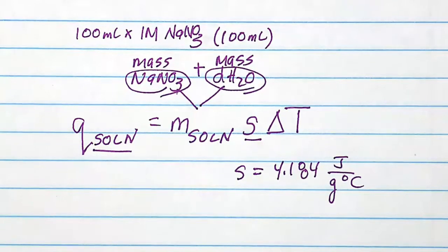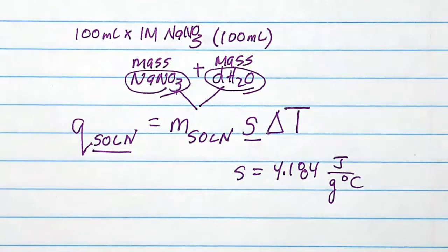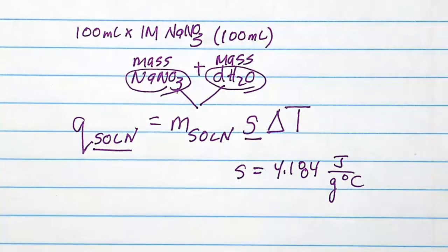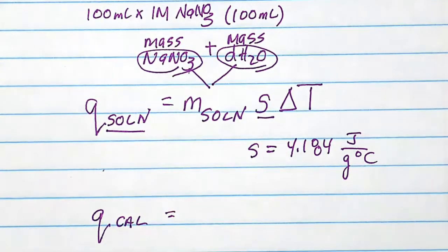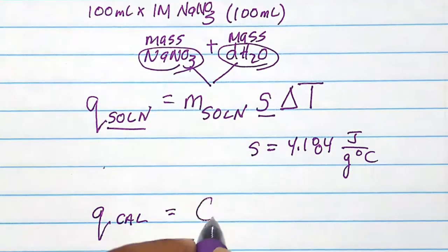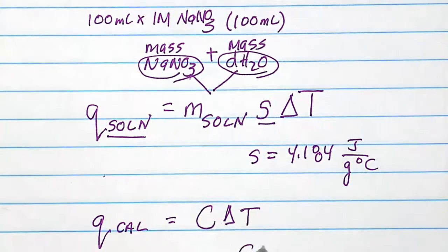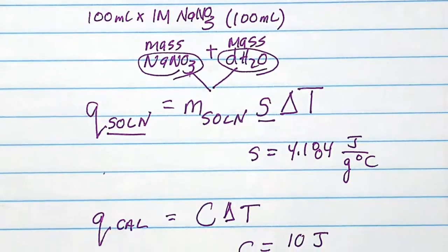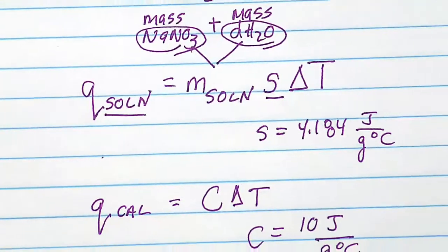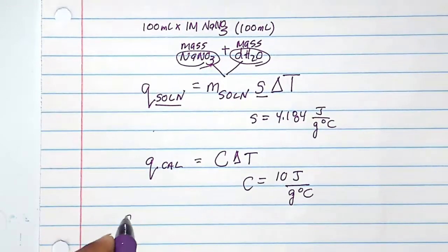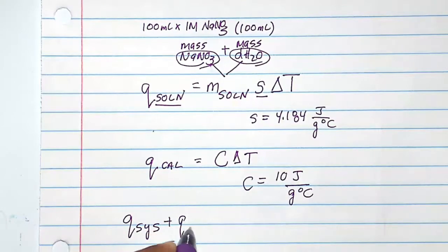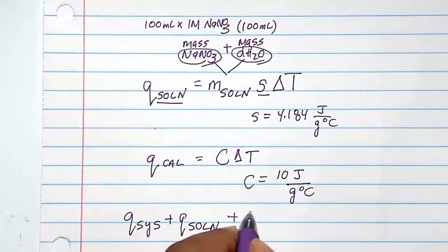The second heat you will have to determine is the heat of the calorimeter. Those two styrofoam cups also absorb heat and have a heat capacity. We determine that as C times delta T, where C is about 10 joules per degree C according to your lab manual.